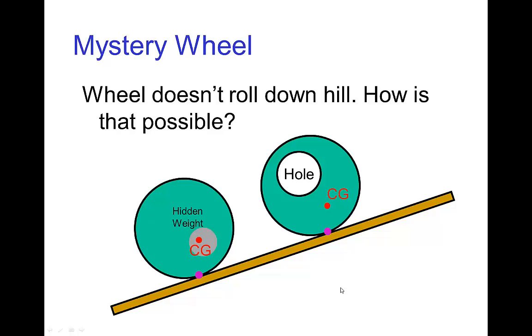Maybe a more obvious example would be if we had a wheel that had a hole in it, so the center of gravity of this wheel is offset. If it was to roll downhill, the weight would first have to go up and then go down. So the center of gravity would have to first rise before it could fall, and so the wheel doesn't roll.